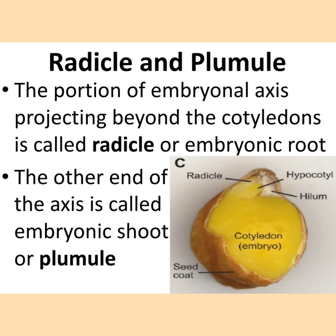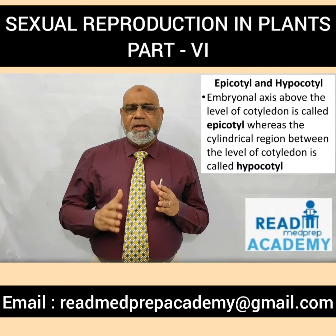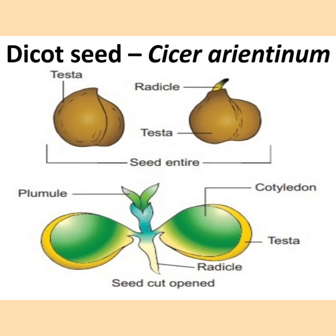The portion of the embryonal axis projecting beyond the cotyledons is called the radicle or embryonic root; the other end is called the embryonic shoot or plumule. Embryonal axis above the level of the cotyledons is called the epicotyl, and the cylindrical region between the cotyledons is called the hypocotyl. In the image of Sesbania orientinum you can see the full seed covered by the testa, with the radicle emerging through the seed. When the seed is cut open, inside the testa are the cotyledons; in the center of the embryonic axis is the plumule (upper side) and radicle (lower side).